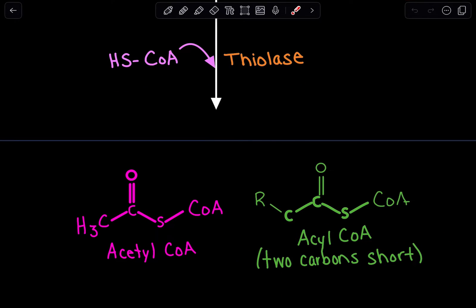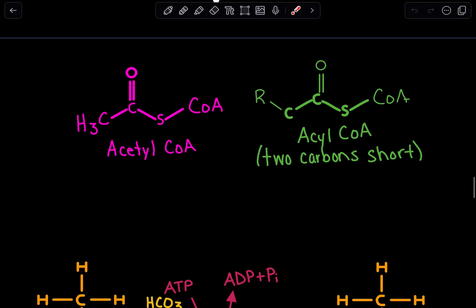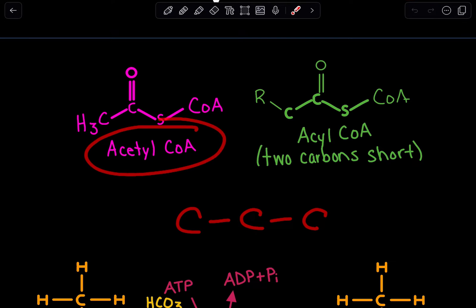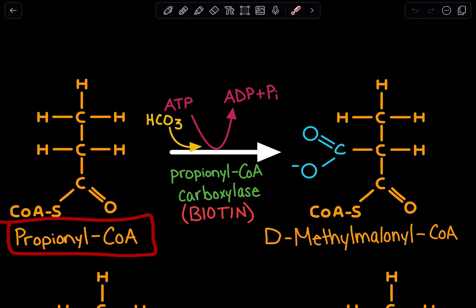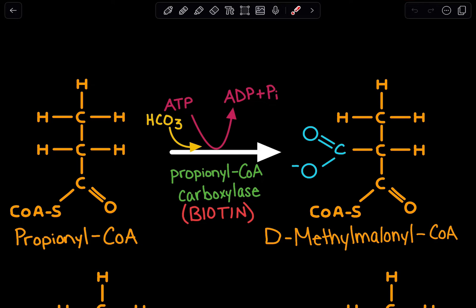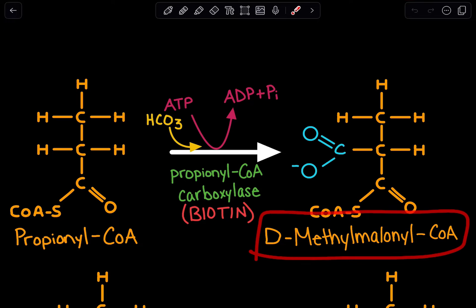This process so far is the same as regular beta-oxidation. But the problem we face is at the very end of beta-oxidation — in that final round, we are going to end up with three carbons rather than two carbons to produce acetyl-CoA. That three-carbon molecule is referred to as propionyl-CoA. We use an enzyme known as propionyl-CoA carboxylase with biotin as a cofactor to convert propionyl-CoA into D-methylmalonyl-CoA.